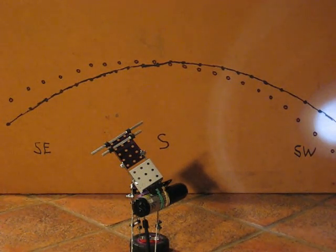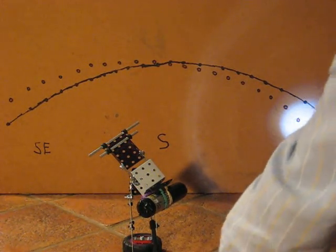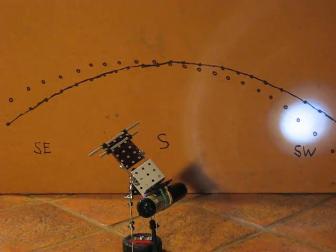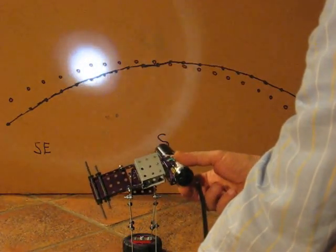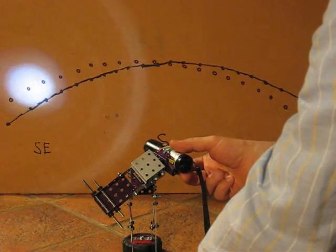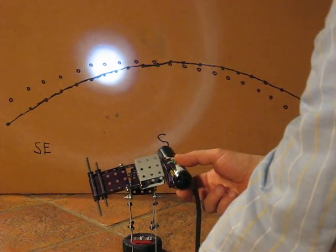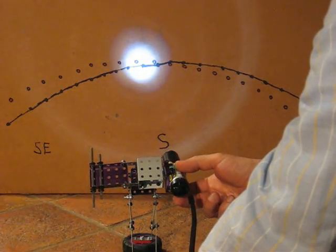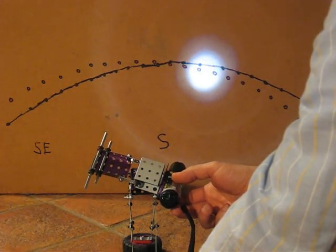I will now turn the mount counterclockwise in azimuth a bit and see how it tracks my artificial star. The dots follow the track my now misaligned mount makes across the sky. Notice that the star appears to rise relative to the track the mount makes.